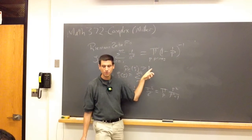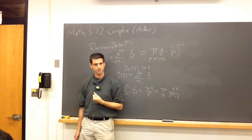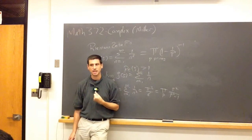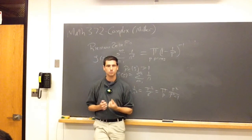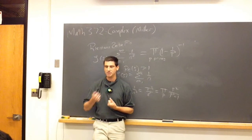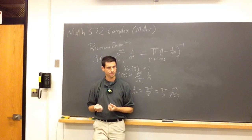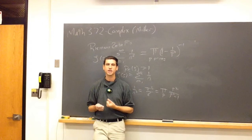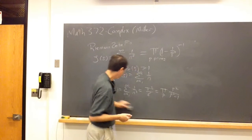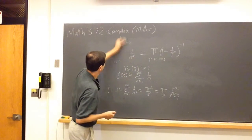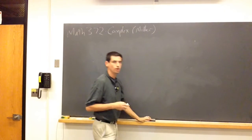The zeta function is initially only defined when Re(s) > 1. We're going to need to expand this to other values of s to really make progress. Another topic we might get into is a proof of the central limit theorem, which says if you have a bunch of nice random variables and keep sampling from the same distribution, the sample average converges to being normally distributed. The best proofs use complex analysis and moment analysis.